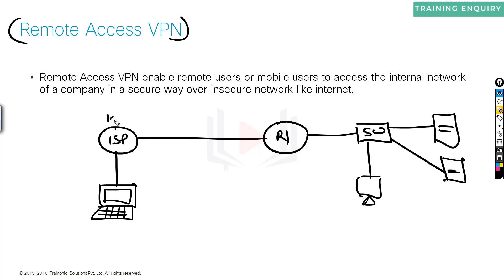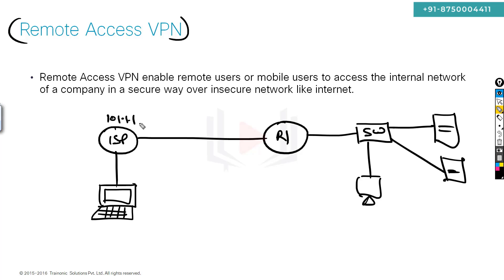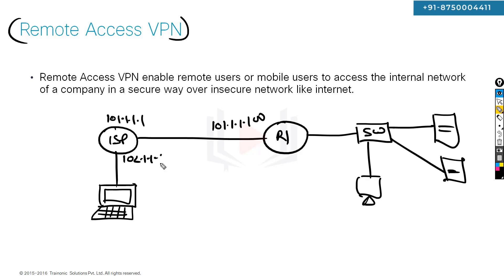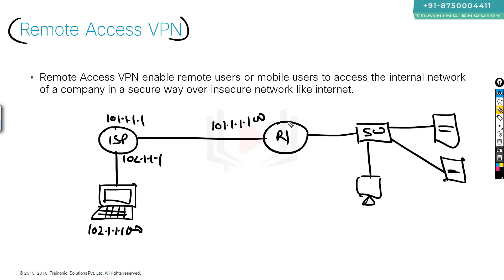The ISP public IP addresses are 101.1.1.1, 101.1.1.100, 102.1.1.1, and 102.1.1.100.